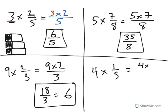And last, we have four times one. Remember, whole number times numerator. The denominator remains the same for an answer of four-fifths.